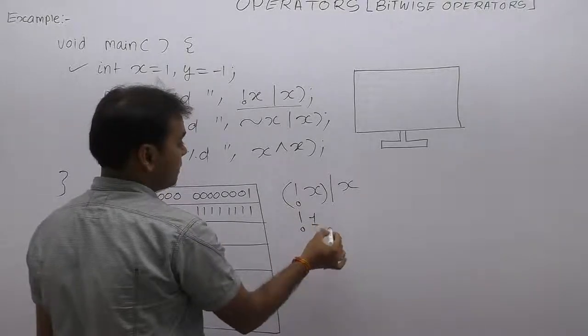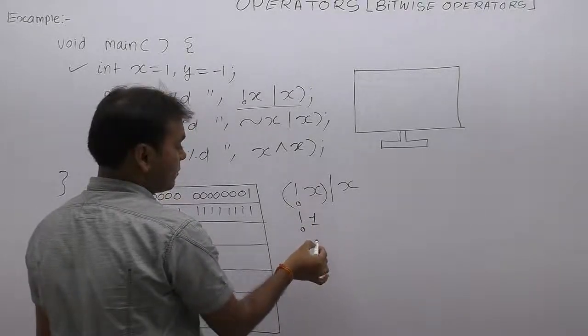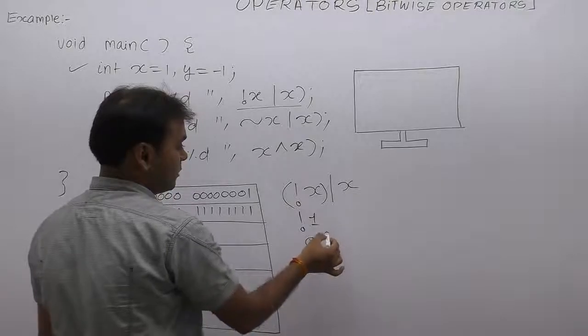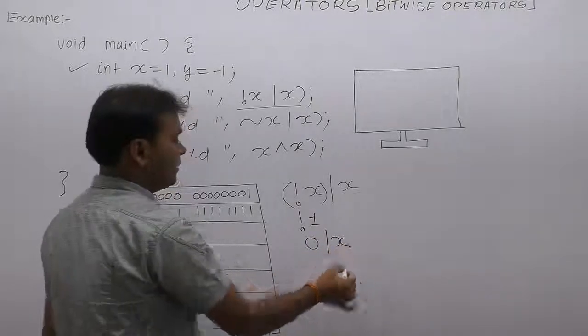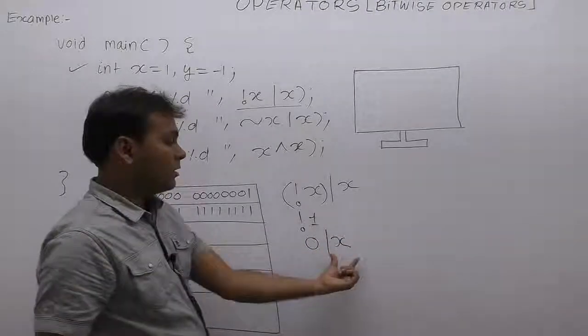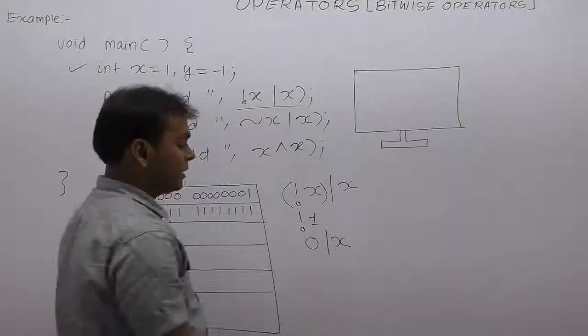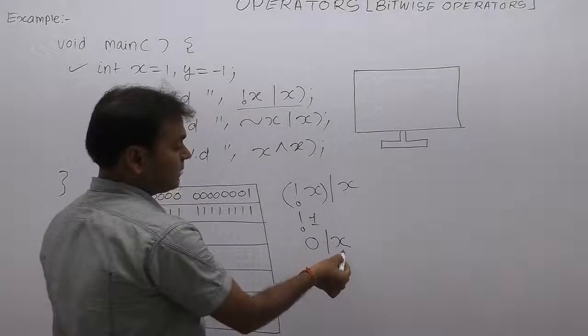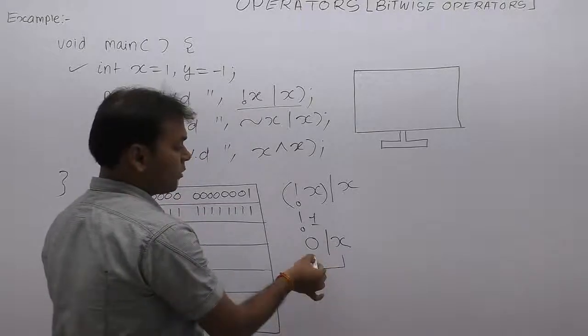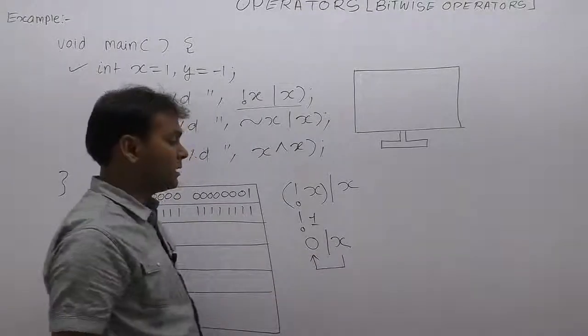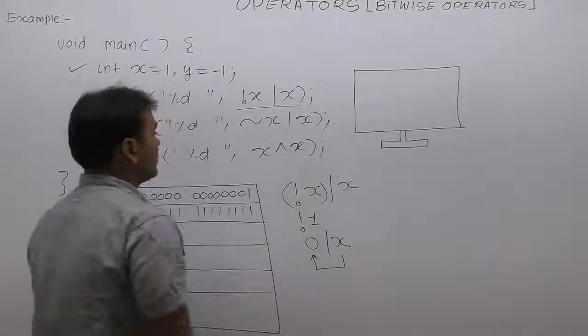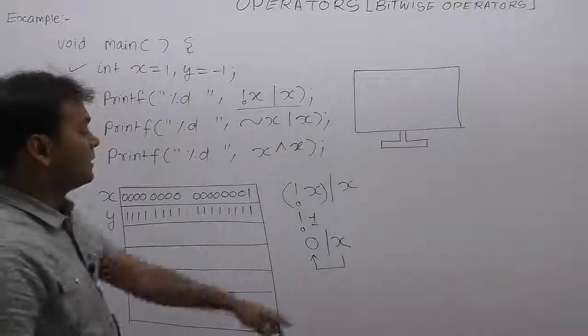Then 0 bitwise OR x. We already discussed that any variable's bitwise OR operation with 0 gives the same number. So x, which is initially 1, the result is also 1.